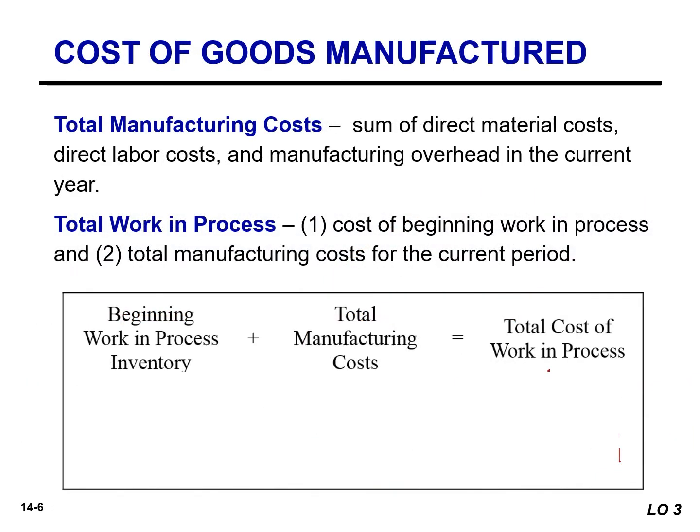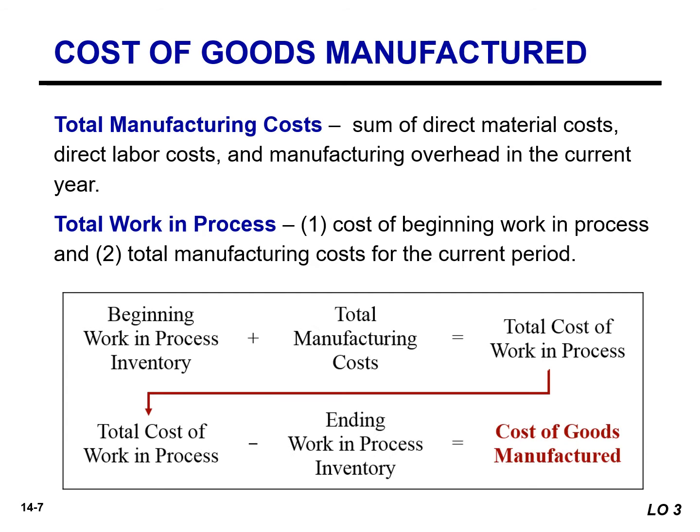To determine the cost of goods manufactured, companies add the cost of the beginning work in process to the total manufacturing cost for the current year to find the total cost of work in process for the year. We then subtract the ending work in process from the total cost of work in process to find the cost of goods manufactured.